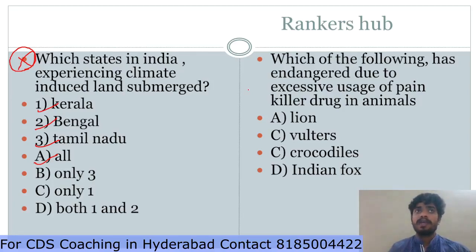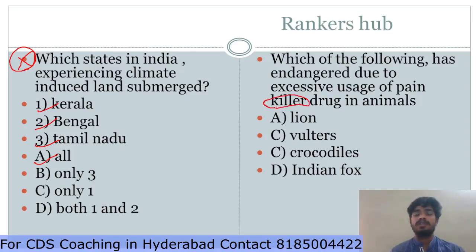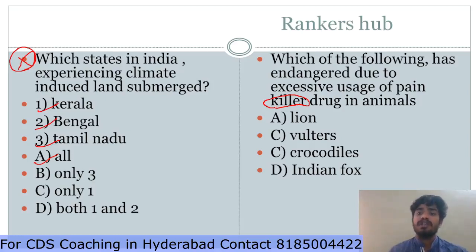Which of the following is endangered due to the excessive usage of painkillers? During 2002–2003, the excessive usage of the painkiller drug Diclofenac caused the excessive death of vultures. Vultures feed on dead bodies of animals that had been treated with this drug, and it caused the depletion of the entire vulture population.